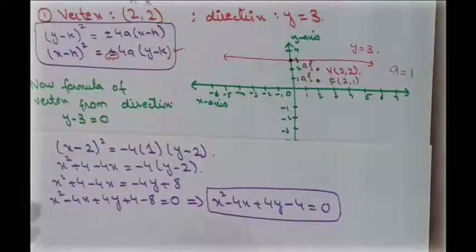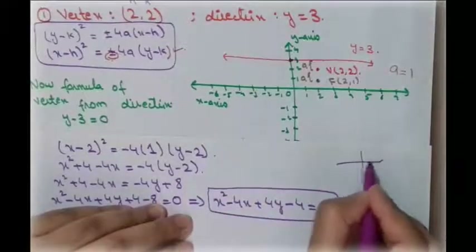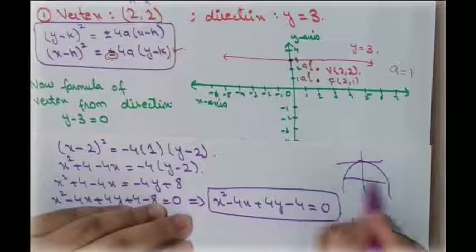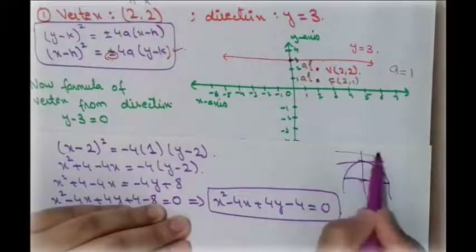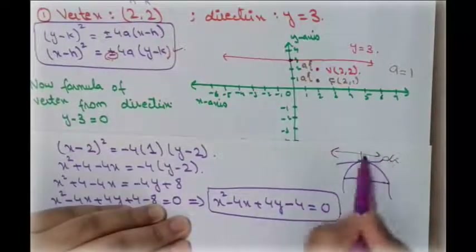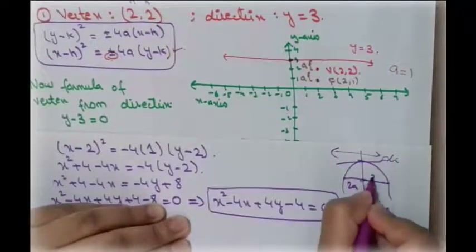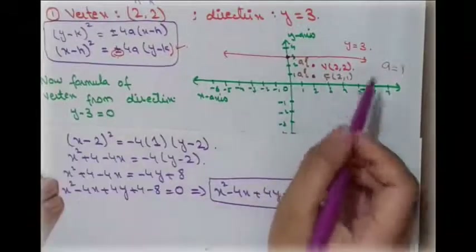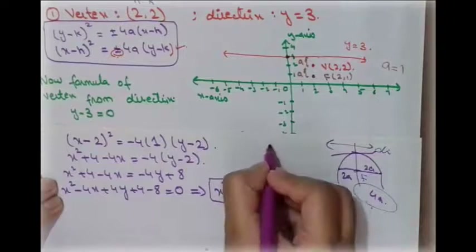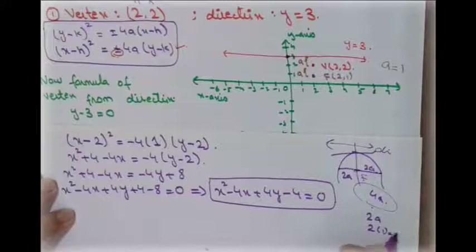To draw the parabola, we use the concept of the latus rectum — a line through the focus parallel to the directrix, with both ends on the curve. The length of the latus rectum is 4a, where each half is 2a. Since a = 1, the half-length is 2(1) = 2.